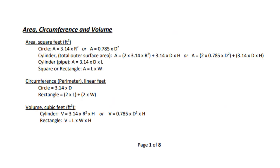We're also going to have to solve for volume. For a cylinder, volume equals 0.785 times diameter squared times height. Because pipes always give you the diameter, remember volume is in cubic feet, so your diameter and your height or length for a pipe are going to have to be in feet — you'll need to do some conversions.